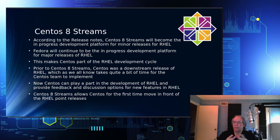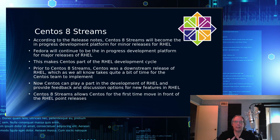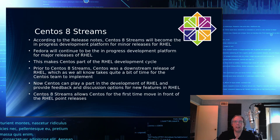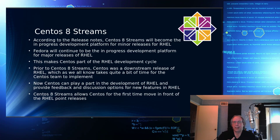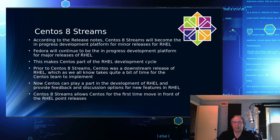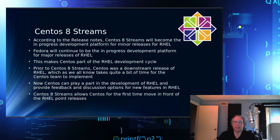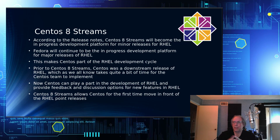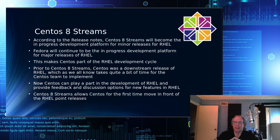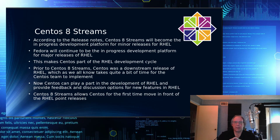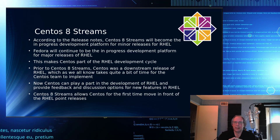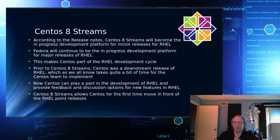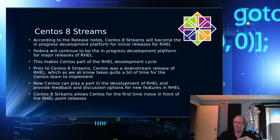CentOS, for the first time under Streams, can be ahead of RHEL. They can be on the point releases and ahead of RHEL. In fact, even this release — the CentOS Streams release — is ahead of RHEL on the kernel, just slightly, but it is ahead.